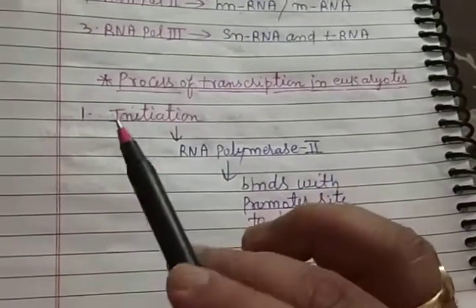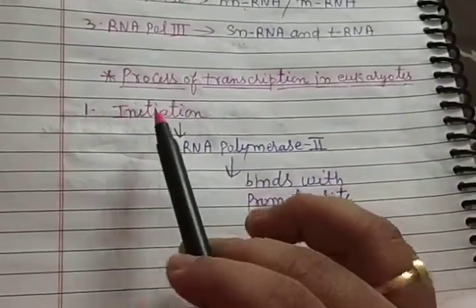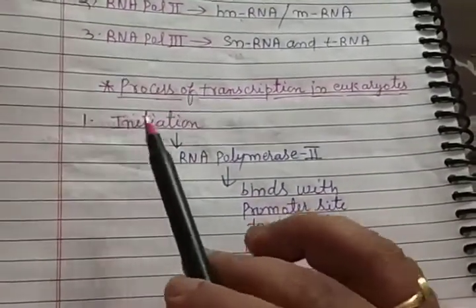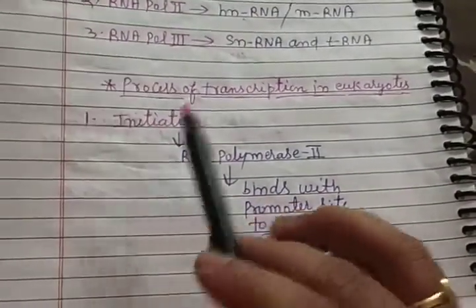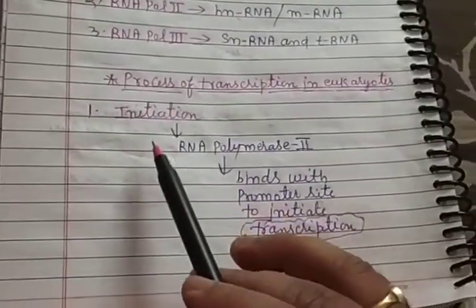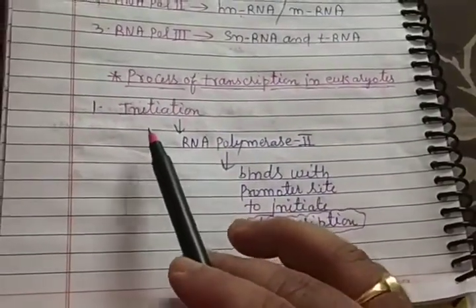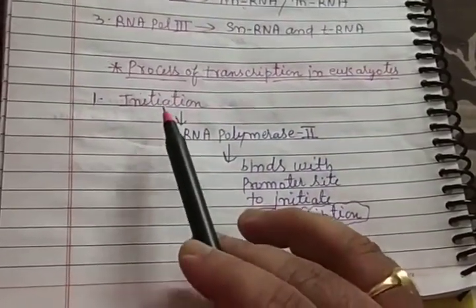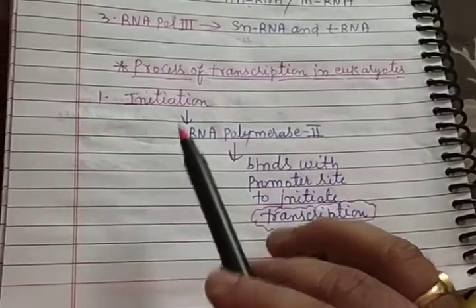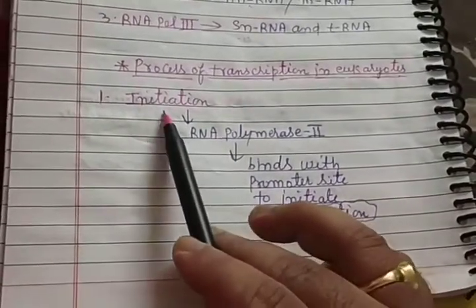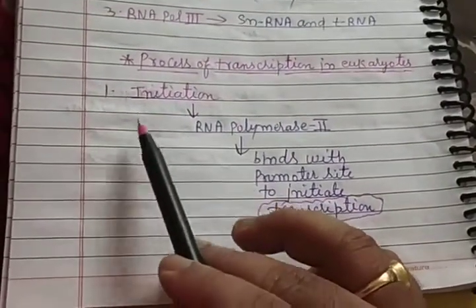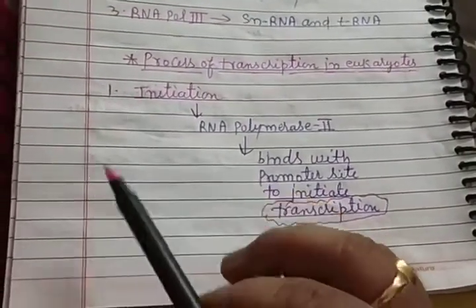Now we will study the process of transcription in eukaryotes. Like prokaryotes, it has three stages: initiation, elongation, and termination. During initiation, the RNA polymerase enzyme binds to the promoter site by the help of sigma factors.